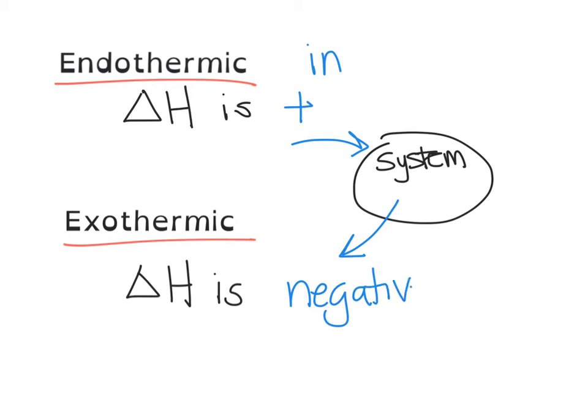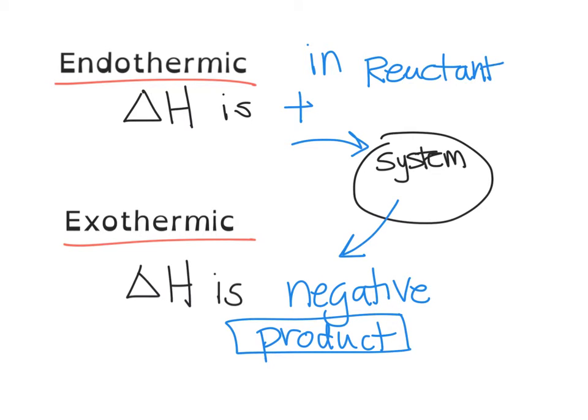If we go back to what I just said on the previous screen, when ΔH is negative, we're going to consider this a product. And when ΔH is positive, this is a reactant. Knowing what kind of sign and whether you're a reactant or a product will help you a whole bunch when you're solving problems in this chapter.